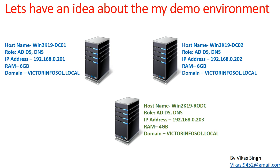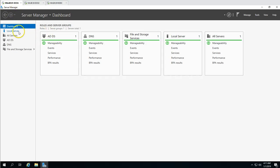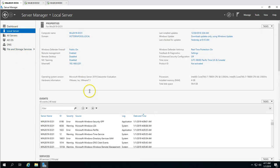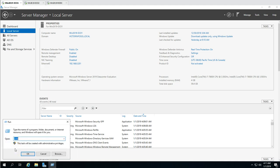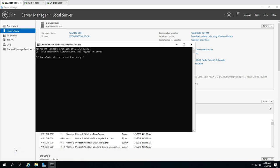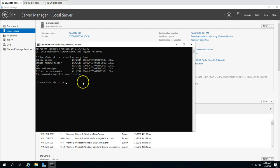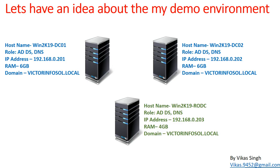Here are the three servers installed in previous videos. The first one is win2k19dc01, which is my primary domain controller — it has the Active Directory and DNS role, and the IP address is 192.168.0.201 in the victorinforsold.localdomain. If I go to CMD and run netdom query fsmo, you can see all the FSMO roles are hosted on dc01, so this is my primary DC. We also have a second writable domain controller, win2k19dc02.